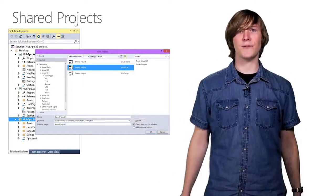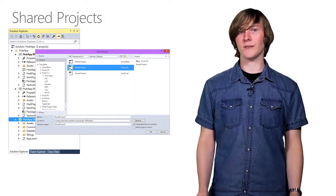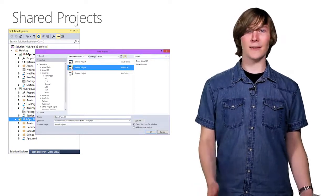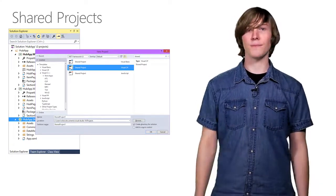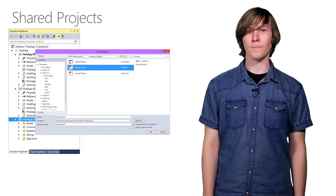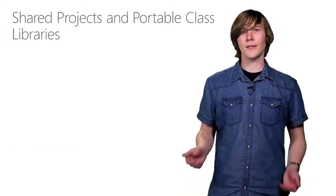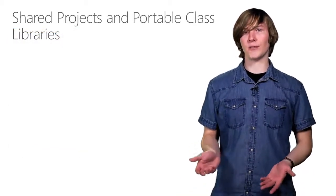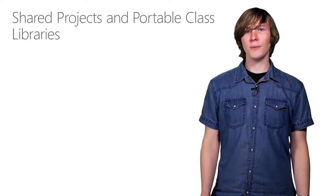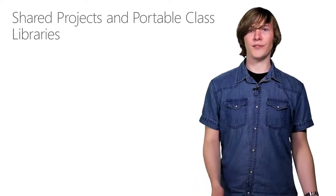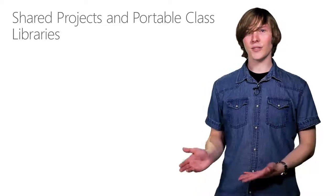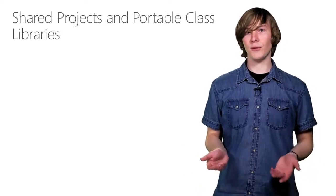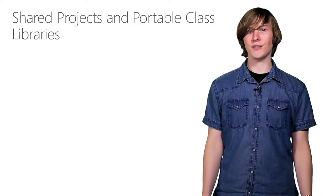In Visual Studio 2015, Shared Projects have evolved into a first-class project type. You can now create empty Shared Projects and link them to other projects with the Reference Manager. Shared Projects are not the only way to share code across platforms in Visual Studio — you may be familiar with portable class libraries from previous versions of the product. Shared Projects and PCLs take very different approaches to the problem, and each is well-suited for different applications.